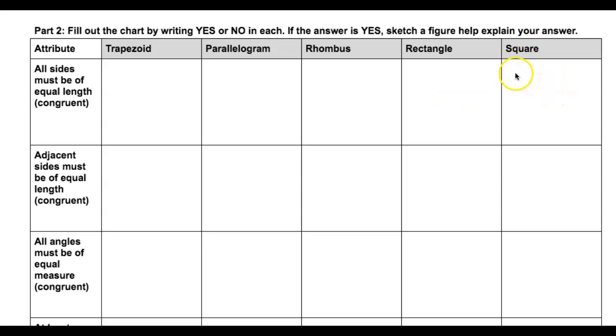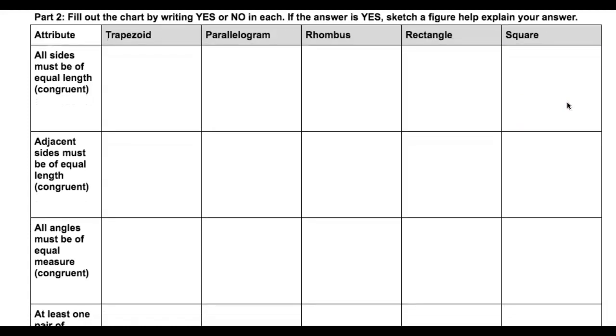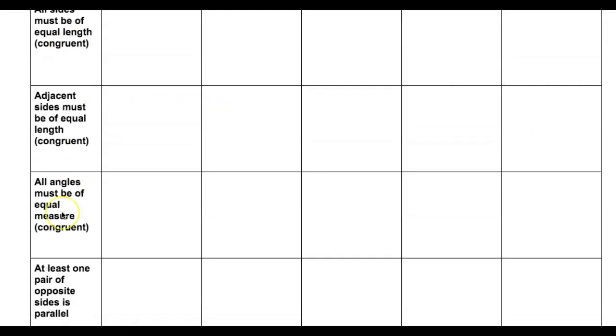Well, I know you guys already know this, but for the square, the answer is yes. So you would draw your square here to help explain why you know that to be true. And then do that for all of the attributes.